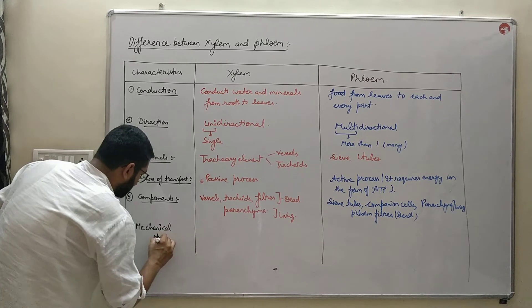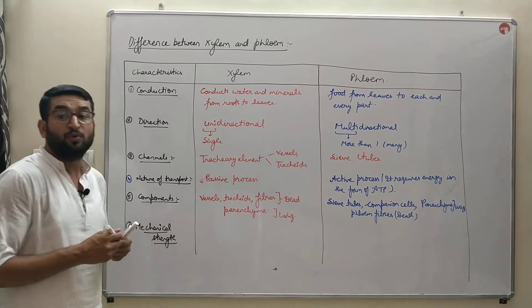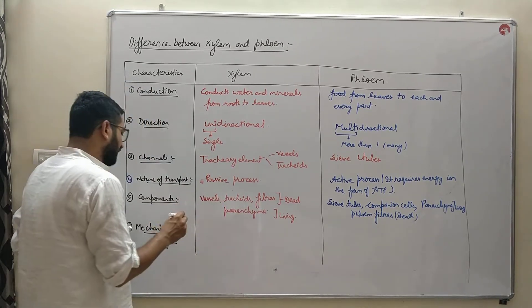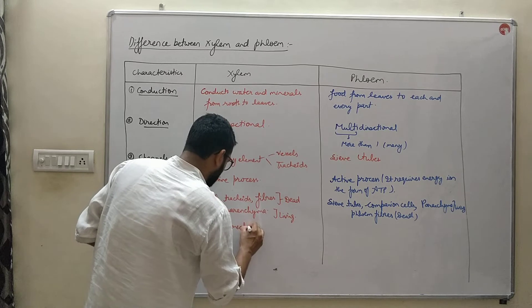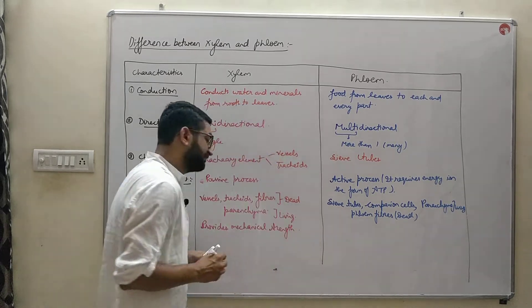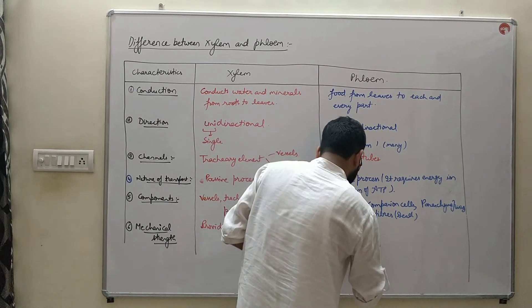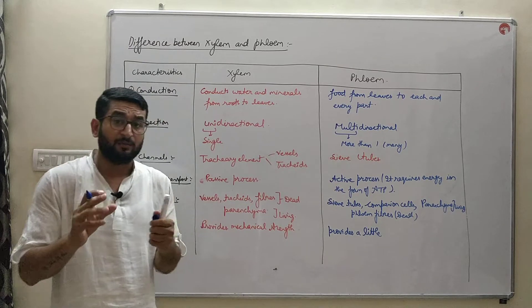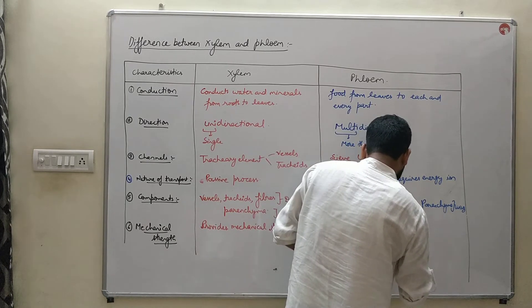The next difference is mechanical strength. Xylem has more dead tissue and is lignified — it has deposition of lignin — which provides significant mechanical strength, so its capacity to provide mechanical strength is quite high. Whereas phloem provides very little mechanical strength, as it has very little deposition of lignin, and lignin is the molecule which provides strength. Due to less lignin deposition, phloem provides little mechanical strength.